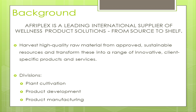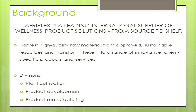The company has three different divisions: plant cultivation, product development, and product manufacturing. We approached the company, they gave us the data and defined the basic manufacturing process. There is inventory in two different stores — the main store and the cold store — both with a limited amount of resources available, which forms one of the constraints.